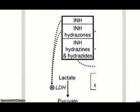INH also impairs lactate conversion to pyruvate. Seizure-associated lactate generation is substantial, as well as the formation of lactic acid. Peak absorption occurs in 1 to 2 hours. The volume of distribution is 0.6 to 0.7 liters per kilogram. Elimination is by hepatic metabolism. The half-life is 0.5 to 1.6 hours in fast acetylators, and 2 to 5 hours in slow acetylators.